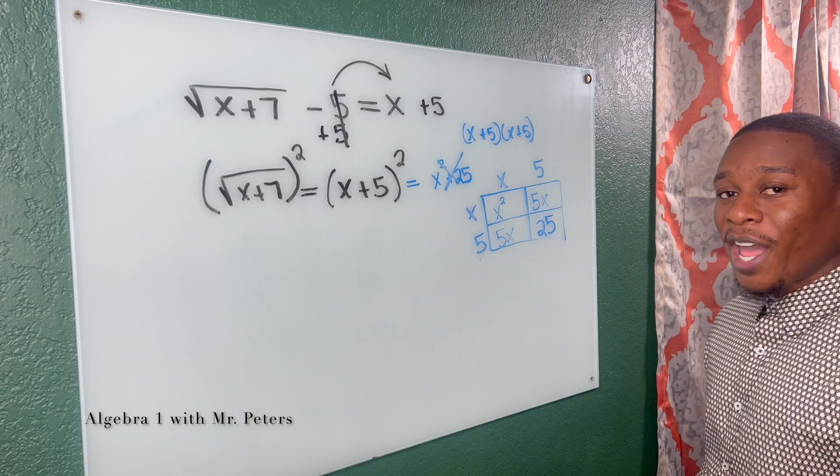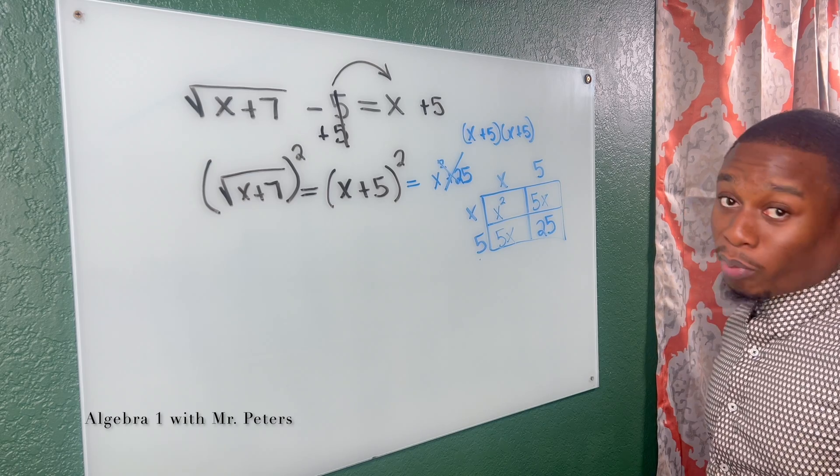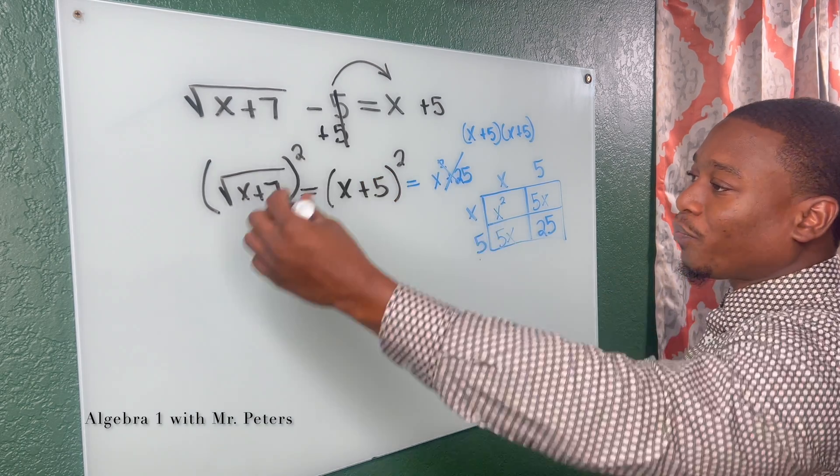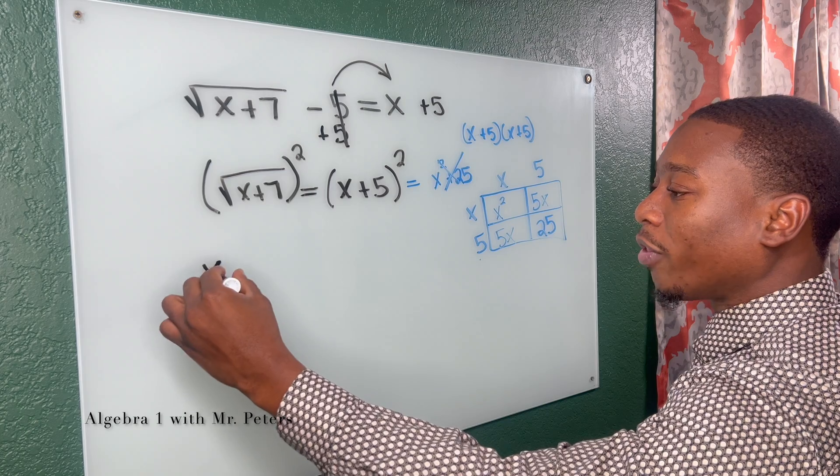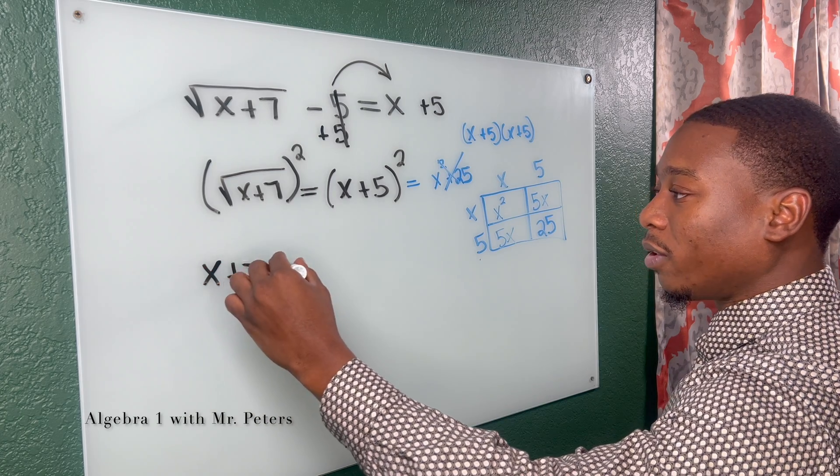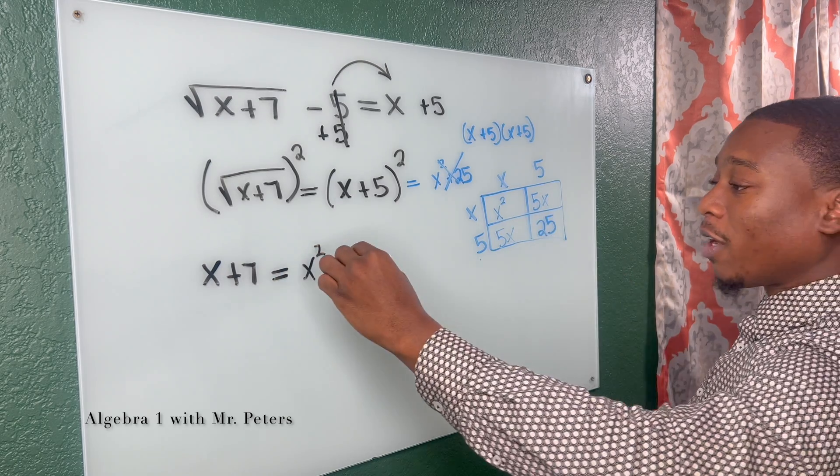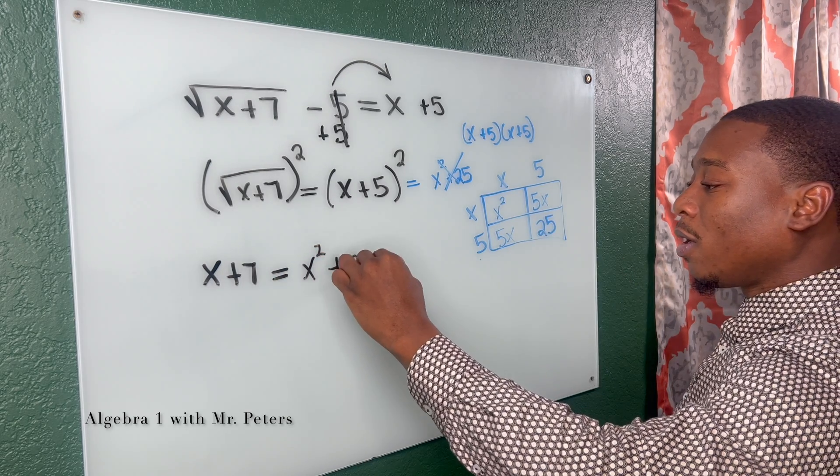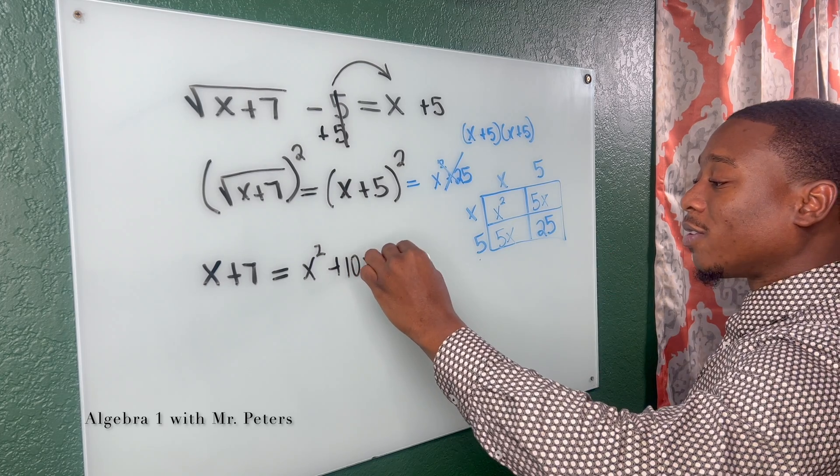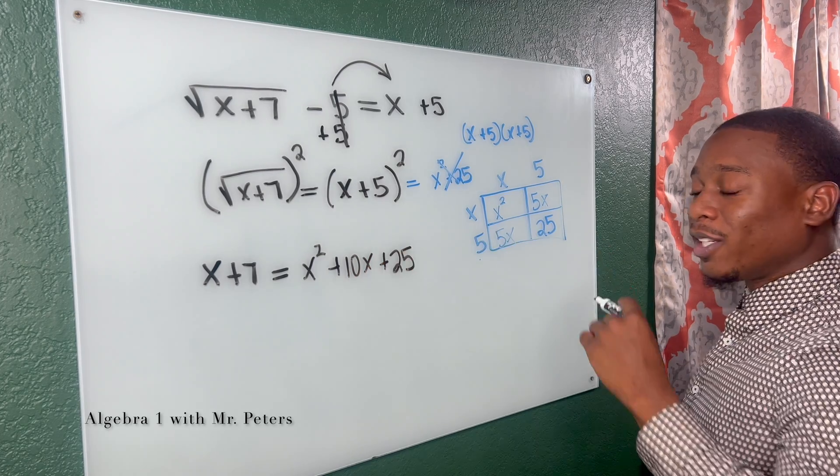My like terms run diagonally. So now that we have that, let's go back to the equation now, the problem. So in the next step, radical is gone. We're left with X plus seven. And this is equal to X squared. Five X and five X gives me 10 X. And then 25 stays the same because there's nothing to add to it.